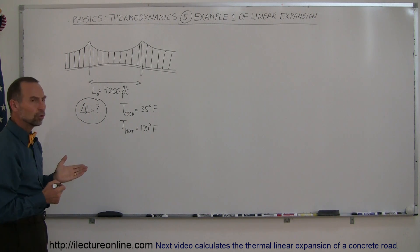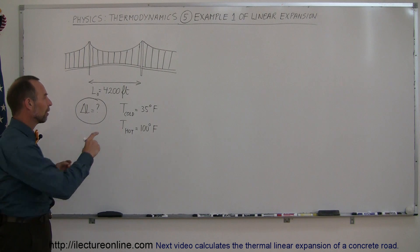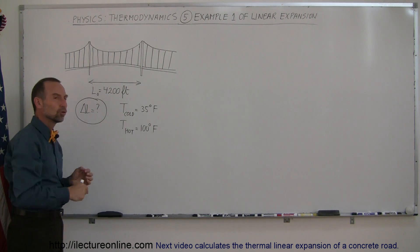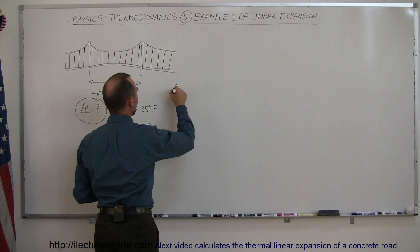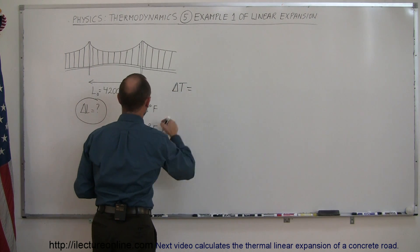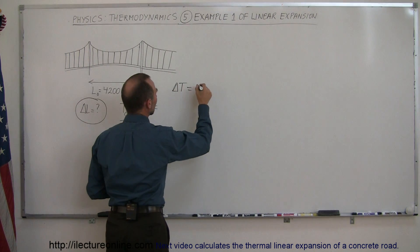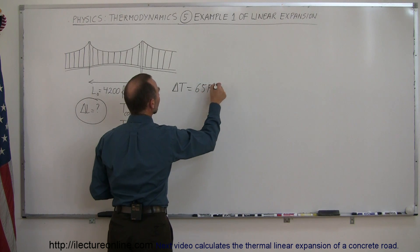So the first thing we're going to do is convert from Fahrenheit degrees to centigrade degrees. So the difference in the temperature, delta T, is equal to 65 degrees, 65 Fahrenheit degrees.